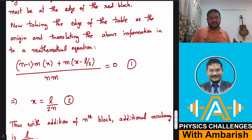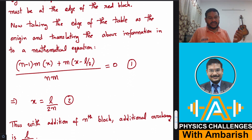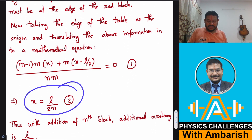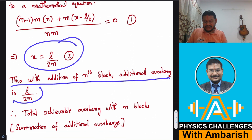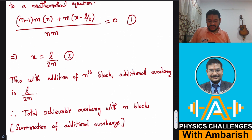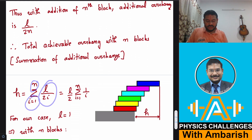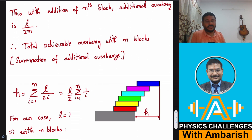The additional overhang due to the nth block is L/(2n). For the (n−1)th block it is L/(2(n−1)), and for the first block it is L/2. So the sequence is L/2, L/4, L/6, L/8, and so on. The total achievable overhang with n blocks is the sum of these additional overhangs: H = Σ(i=1 to n) L/(2i) = (L/2)·Σ(1/i).